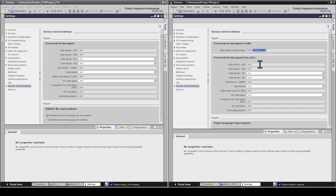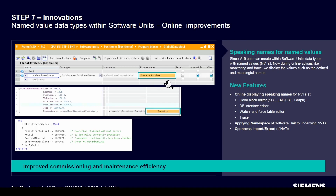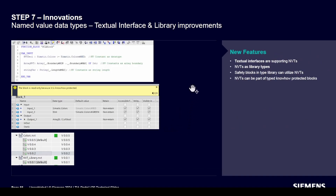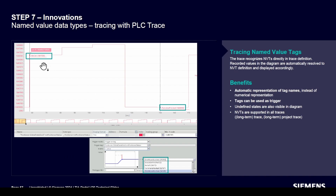As you can see in the settings, there is only an XML export option. Named value data types can now be displayed as meaningful names. Textual interfaces support NVTs, as do NVT library types. Safety blocks and type libraries can utilize NVTs. NVTs can be part of type know-how protected blocks, and the trace recognizes NVTs directly in the trace definition.